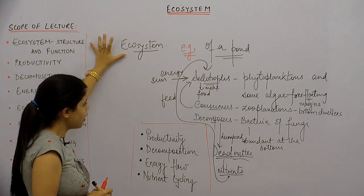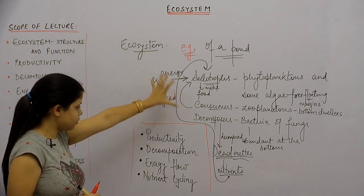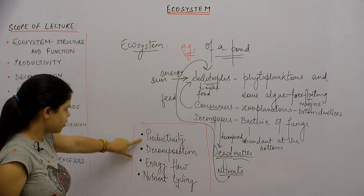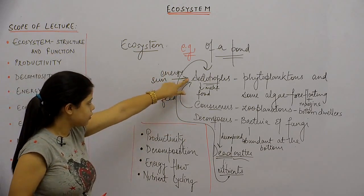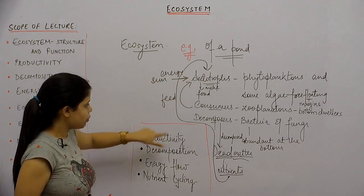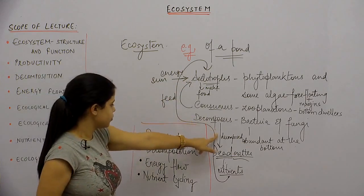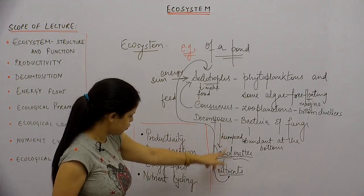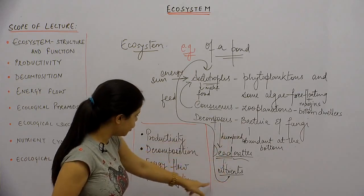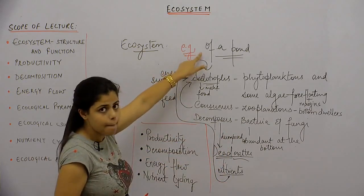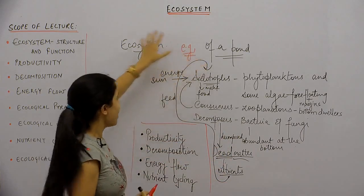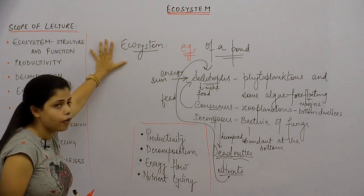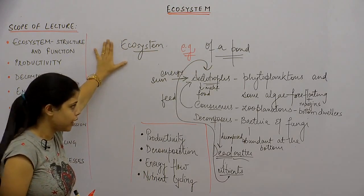By this example, you can figure out why productivity, decomposition, energy flow, and nutrient cycling become important aspects of the ecosystem.